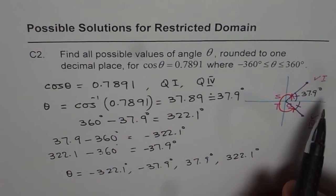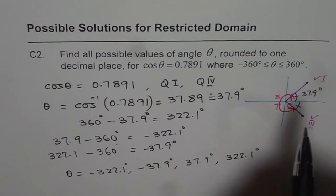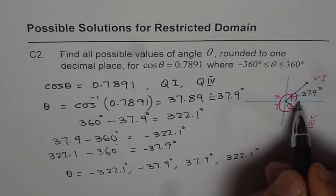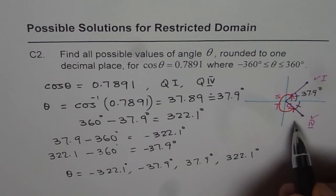Now the other way could have been, so when we have found that the principal angle is 37.9, so that is when you go counterclockwise, this angle is plus 37.9. But when you go clockwise, you can say this angle is minus 37.9.